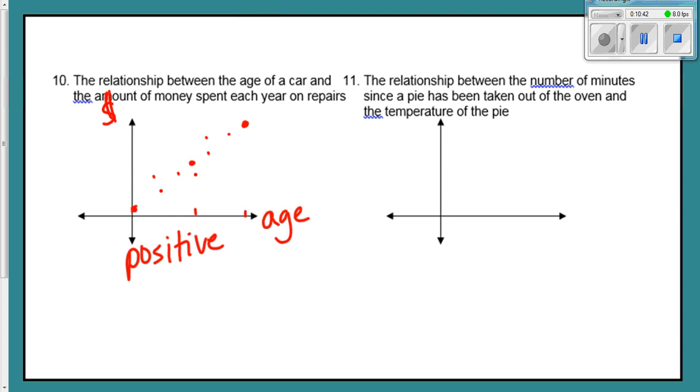The relationship between the number of minutes since a pie has been taken out of the oven and the temperature of the pie. So if it's still in the oven at time zero, this is the temp right here. This is the minutes. It's going to be real hot way up here. You take it out. It's been out for a minute. It's still pretty hot, but it's going down a little bit. It's going down, going down, going down. But then it's probably going to plateau, because it's just going to be room temperature. But in general, this is still a negative trend.